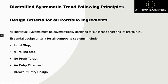Essential design criteria for all composite systems that you include in your portfolio include the need for an initial stop — an initial stop on entry to minimize maximum adverse risk exposure following entry. We also need a trailing stop condition which is used as a basis to define the end of the trending condition and allow for unlimited profit potential, but not leave too much profit on the table when the trend ends. We also need to ensure we do not apply a profit target, which allows for potentially unlimited profit potential on any of our trades.